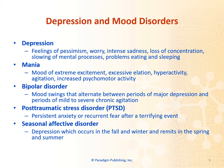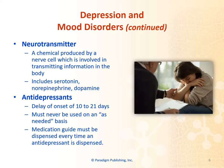Seasonal affective disorder is depression which occurs in the fall and winter and remits in the spring and summer. Neurotransmitters are a chemical produced by a nerve cell which is involved in transmitting information in the body. These include serotonin, norepinephrine, and dopamine. Antidepressants have a delayed onset of 10 to 21 days. They must never be used on an as-needed basis, and the medication guide must be dispensed every time an antidepressant is dispensed.